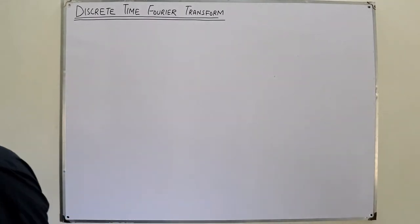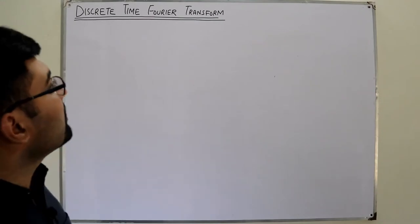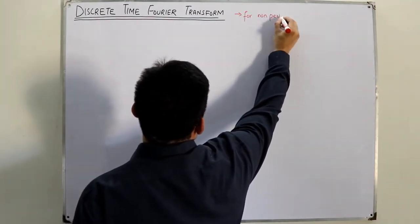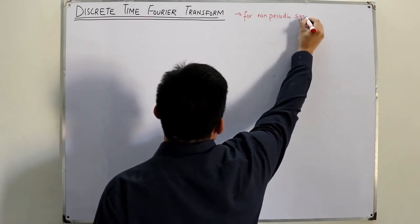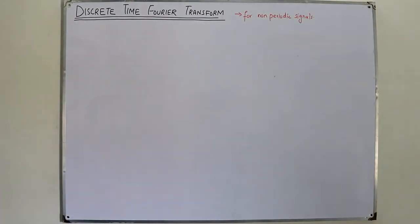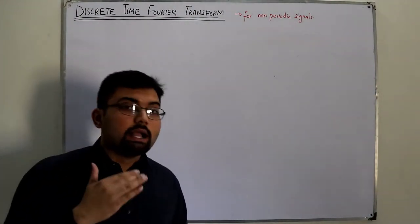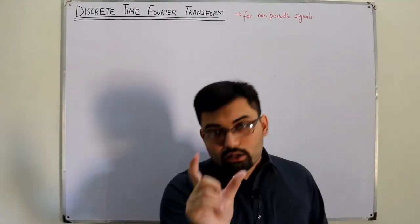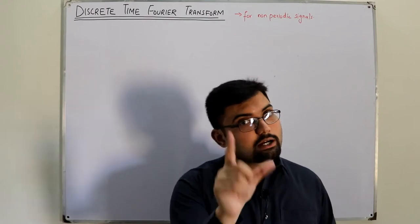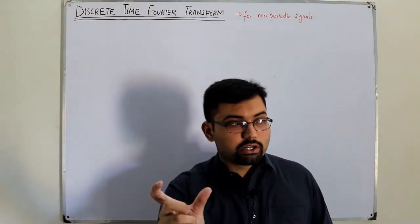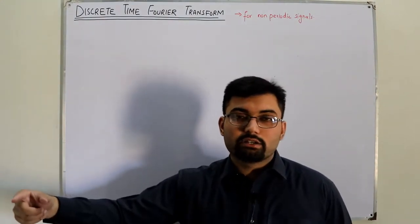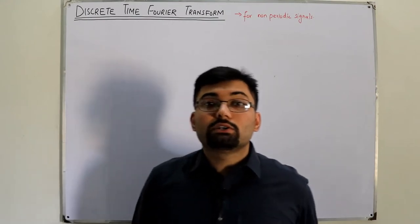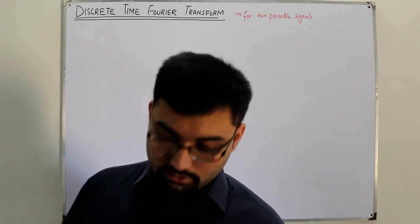This is the last of the Fourier tools, and it is used for non-periodic signals. The basic method remains the same: for a non-periodic signal, we take a periodic version of it. We know that that periodic version will have a Fourier series. Then we take the limits to infinity, and that representation at limit equal to infinity is the Fourier transform expression.